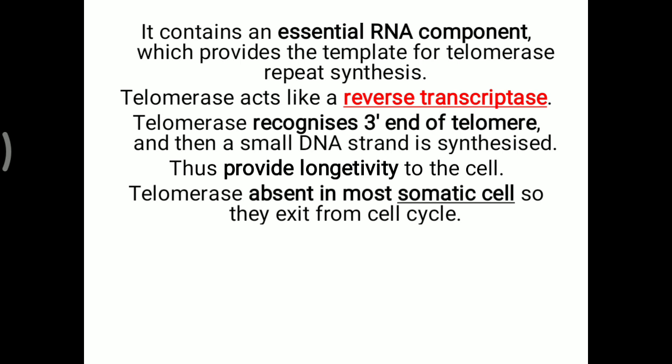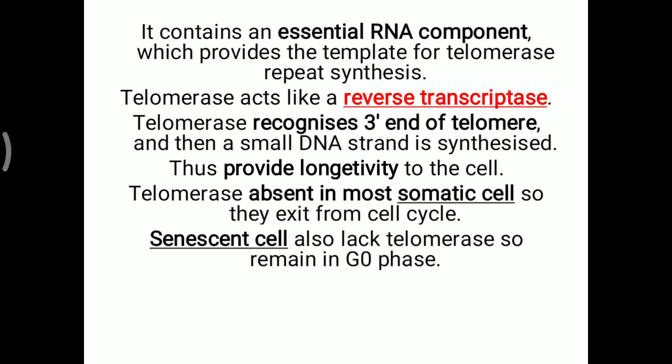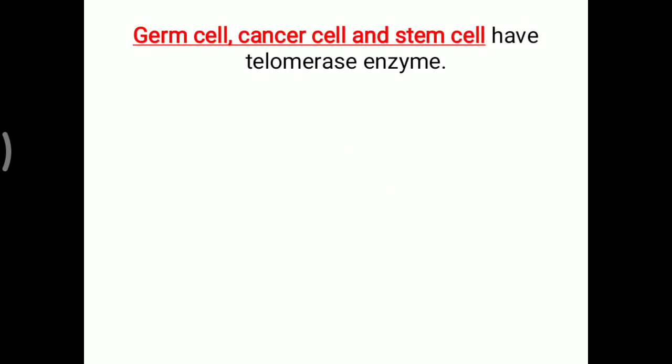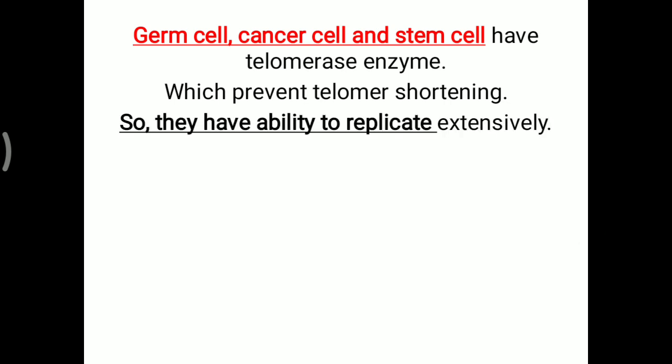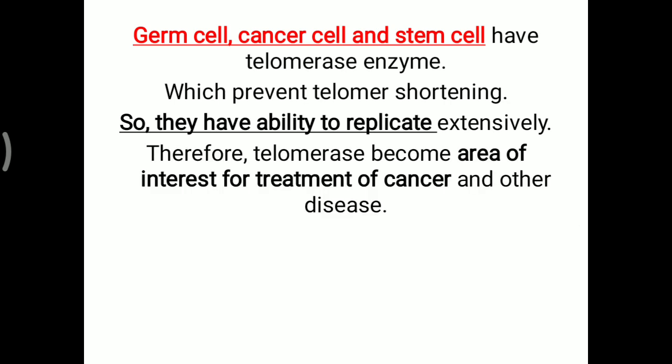Telomerase is absent in most somatic cells, so they exit from the cell cycle. Older or senescent cells also lack telomerase enzyme, so they remain in the G0 phase — meaning they are physically present but have no further ability to replicate. Importantly, germ cells, cancer cells, and stem cells have telomerase activity, which prevents telomere shortening. In these cells, telomeres are not shortened and maintain their size, giving them the ability to replicate extensively. This is why stem cells and cancer cells are able to continuously replicate — because of the presence of telomerase enzyme. Therefore, telomerase has become an area of interest for the treatment of cancer and other important diseases.